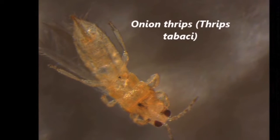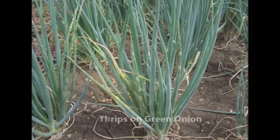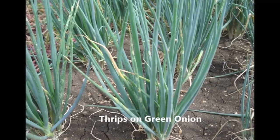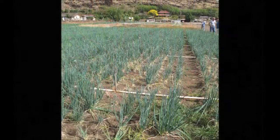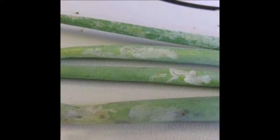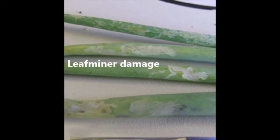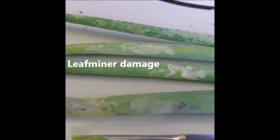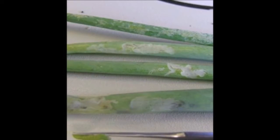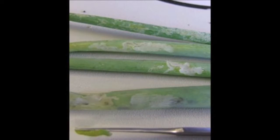Onion thrips is a major insect pest of onion in Hawaii throughout the year. Their feeding causes longitudinal silvery streaking or blotching. Thrips damage is even more devastating if thrips transmit iris yellow spot virus, which was reported in Hawaii in 2010. Thrips damage symptoms are different from leafminer damage, which produces winding trails on the leaves. Leafminer population outbreaks often occur as a result of broad-spectrum insecticide application, which destroys their natural enemies.